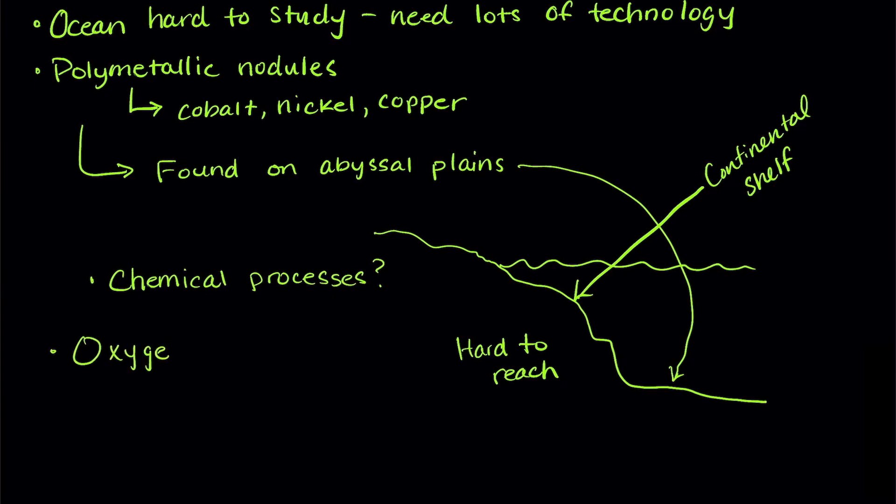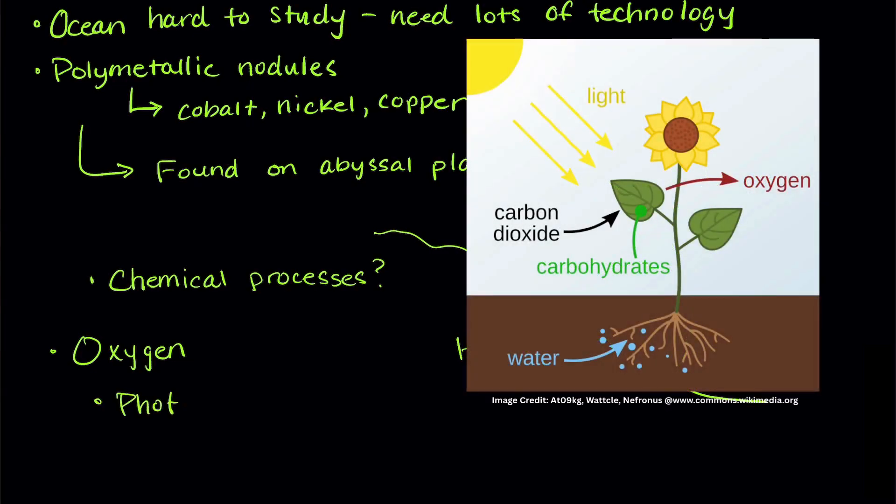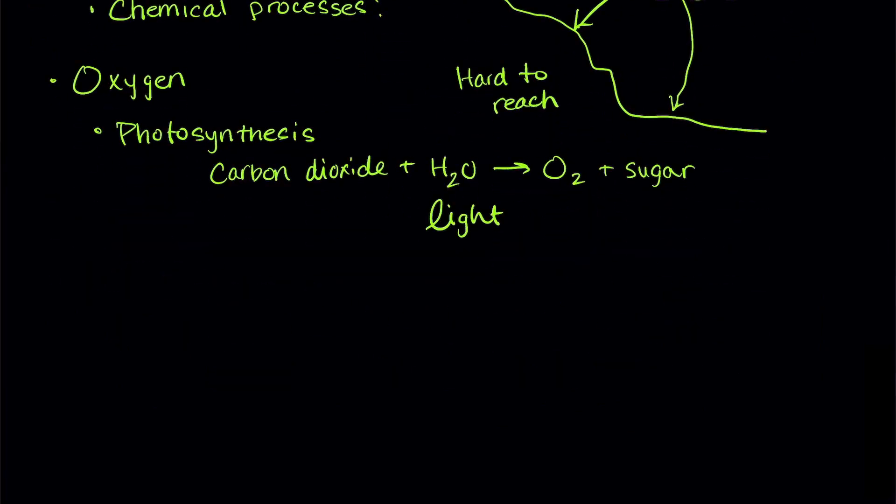Most organisms either use or produce oxygen, so this is a great chemical to start with. We know that the deep ocean is dark, so photosynthesis can't happen. Remember, photosynthesis uses carbon dioxide and water to create oxygen and sugar, but it needs light to happen. Respiration, on the other hand, uses oxygen. So respiration is a logical place to start researching chemical processes.